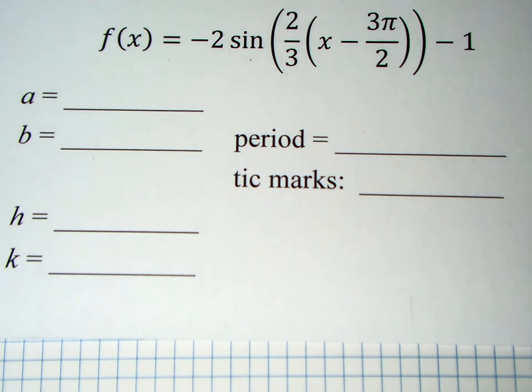So this first equation we're going to do here is f of x equals negative 2 sine of 2 thirds times x minus 3 pi over 2 minus 1. Before we get too much into this we need to see what the format of the transformations are.